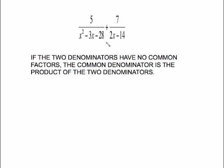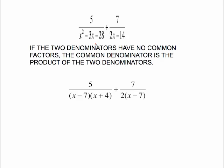These denominators are a little more complicated than the ones we've dealt with before. To tell if they have a common factor, we're going to have to factor them. This one factors as (x − 7)(x + 4), and the second one — all we can do is take out a common factor of 2.